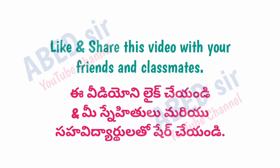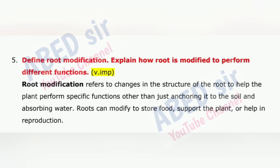Next important long question is 5: Define root modification and explain how roots are modified to perform different functions. Root modification refers to changes in the structure of the root to help the plant perform specific functions other than just anchoring it to the soil and absorbing water. Roots can be modified to store food, support the plant, or help in reproduction.